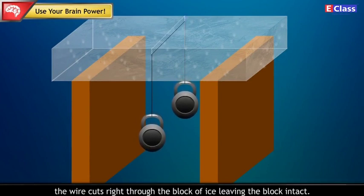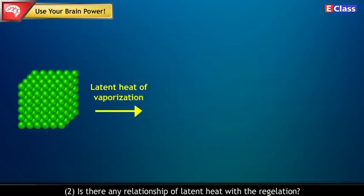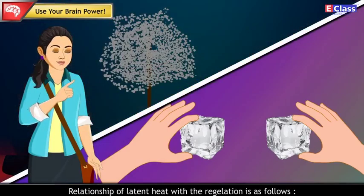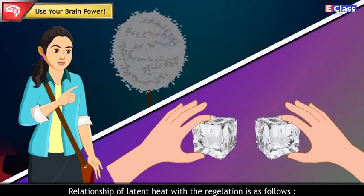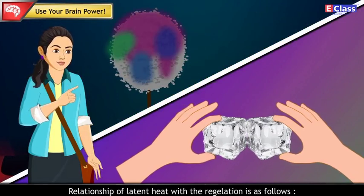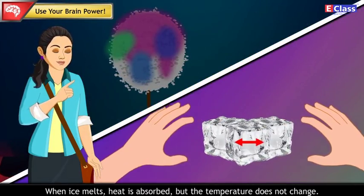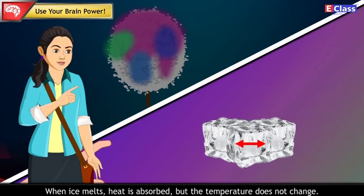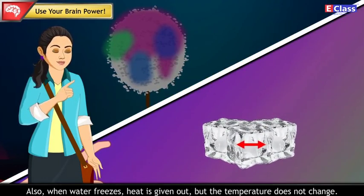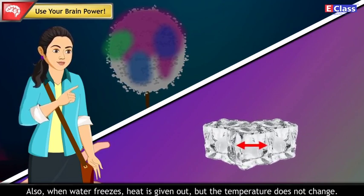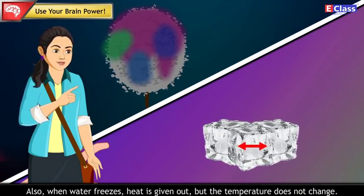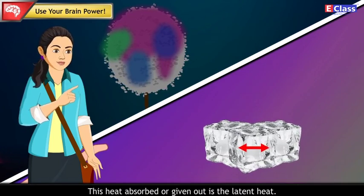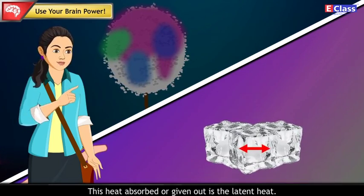Is there any relationship of latent heat with the regulation? Answer: Relationship of latent heat with the regulation is as follows. When ice melts, heat is absorbed, but the temperature does not change. Also, when water freezes, heat is given out, but the temperature does not change. This heat absorbed or given out is the latent heat.